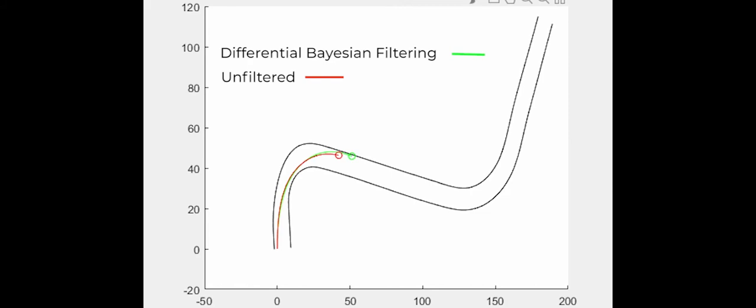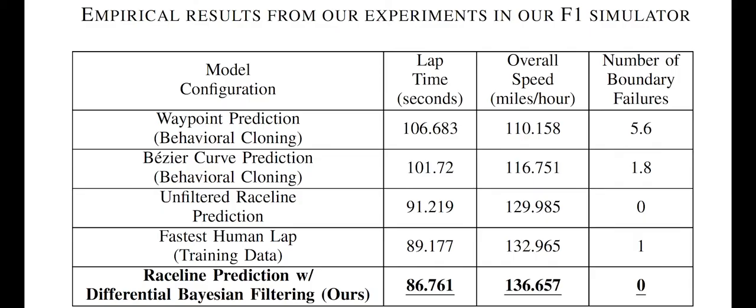Here we can see the difference between the trajectories taken by the DBF method, shown in green, compared to a simple imitation learning-based approach. Our results demonstrate that DBF achieves the fastest lap time by almost three seconds and the fastest speed compared to the unfiltered approach and also when compared to the best human lap from our training data.